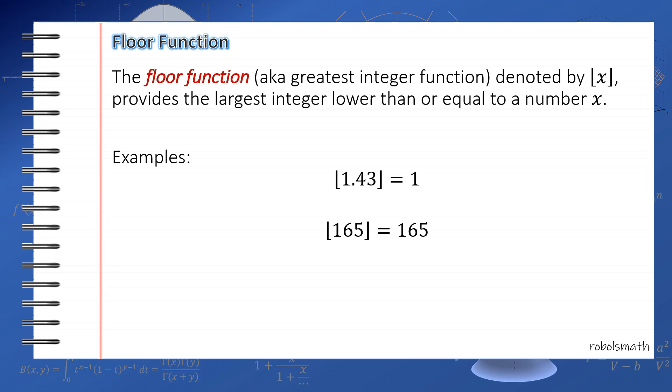If it's an integer, of course, the largest integer is itself. So the floor of 165 is just 165. The floor of 0 is 0. The floor of negative 2 is negative 2. Then you get the floor of pi. Since pi is 3.14 something, then the floor is 3.